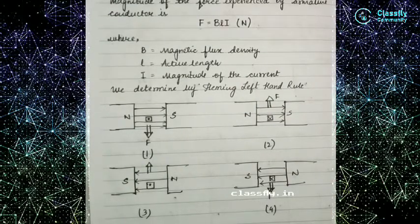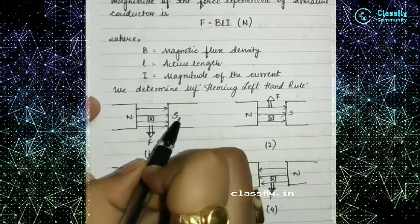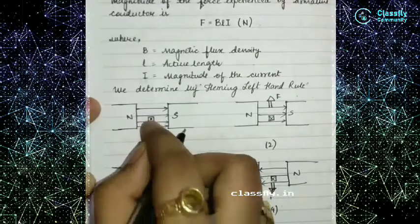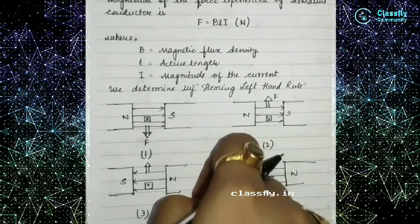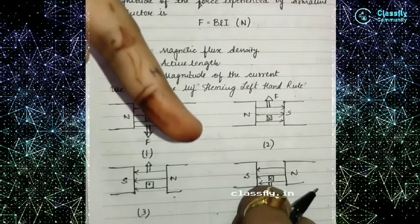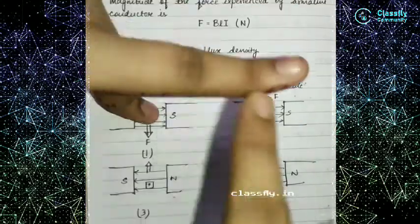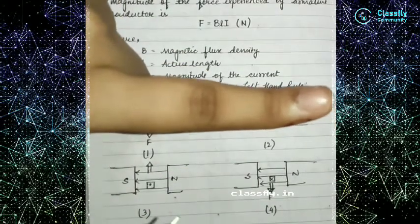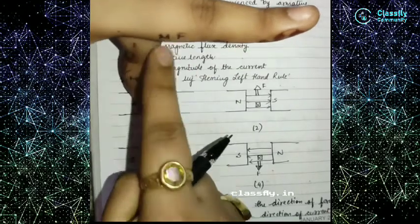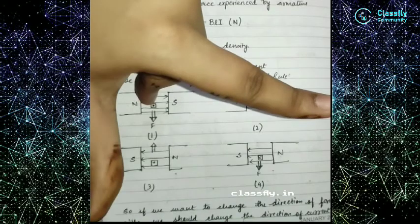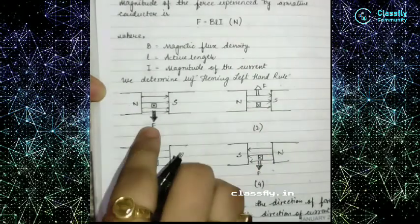To determine the direction of rotation using Fleming's left hand rule: the magnetic field moves from north to south (left to right). If the current is going into the paper (dotted symbol), using the left hand — middle finger into the paper for current, index finger for magnetic field — the thumb shows the direction of force, indicated by the arrow drawn.